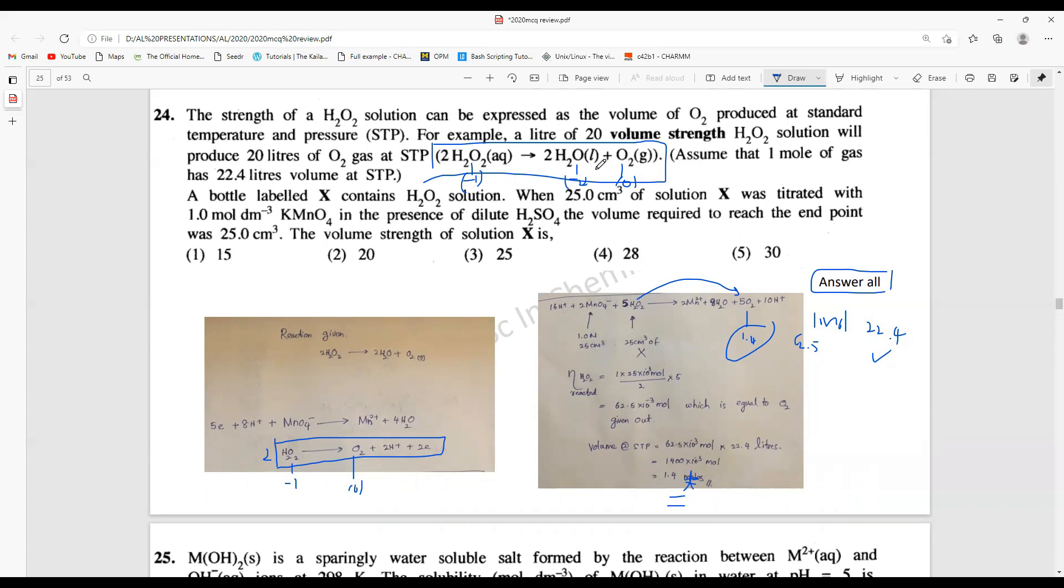This becomes very difficult to calculate. Because if it is disproportionating for an oxidation reaction, this H2O2 giving O2 is okay. But for the reduction reaction, considering the reduction, here we should consider the reduction of MnO4 minus to Mn2+ as well as H2O2 to H2O.